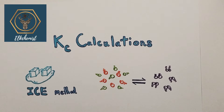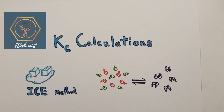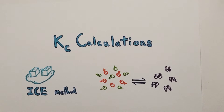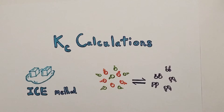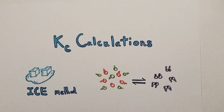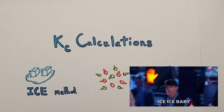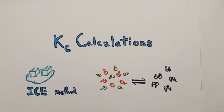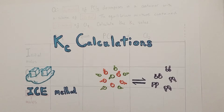Hi there, welcome to this Alchemist Chemistry A-level video looking at how to calculate the equilibrium constant or Kc value. There's a sequential method for calculating the Kc. It's sometimes known as the Rice method, or the ICE method.